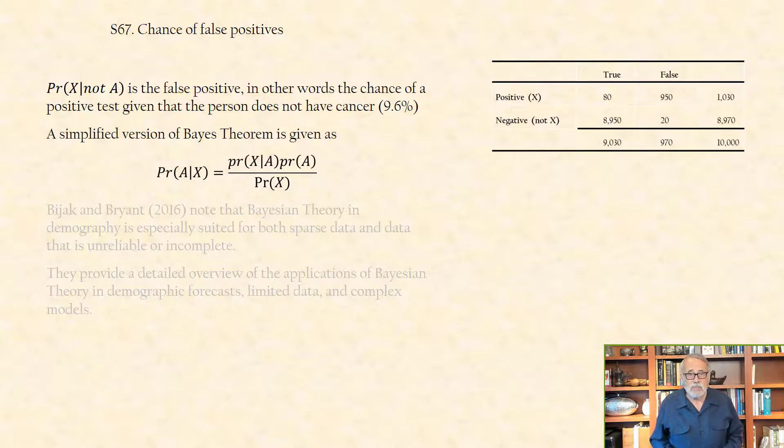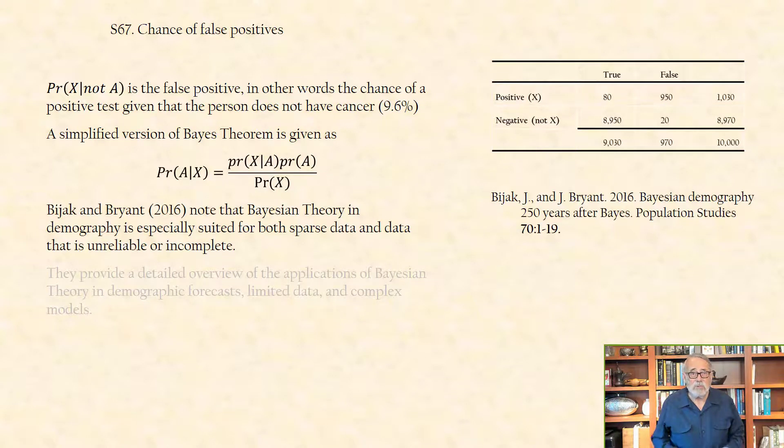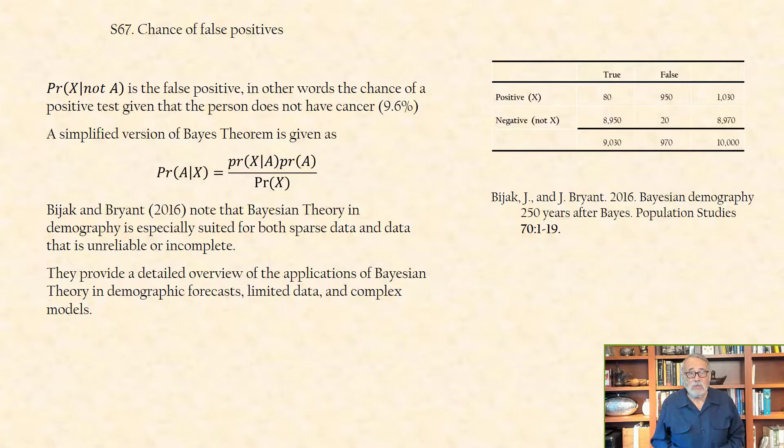Bijak and Bryant 2016 note that Bayesian theory in demography is especially suited for both sparse data and data that is unreliable or incomplete. They provide a detailed overview of the applications of Bayesian theory in demographic forecasts, limited data, and complex models.